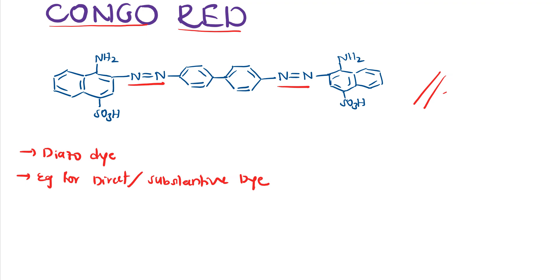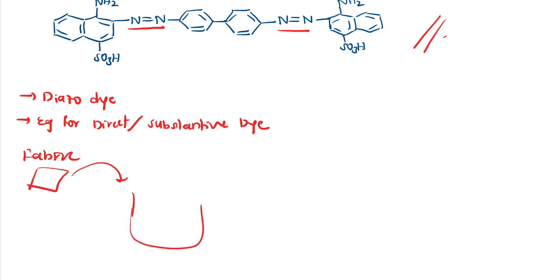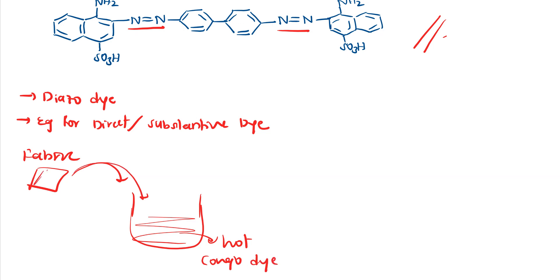In a direct dye process, we take the fabric and immerse it in a hot dye solution — here, hot Congo red dye. After immersing the fabric in the hot dye, we remove it and allow it to dry, and the fabric becomes colored.